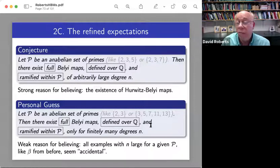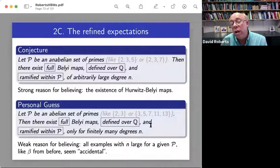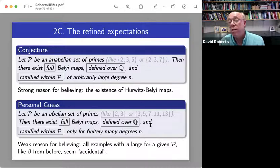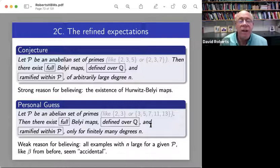So like one weak reason for believing this is the good examples that we do have seem very accidental. So there's a lot of open problems on this slide. You could try to prove the conjecture. You could try to prove the personal guess. You could try to disprove the personal guess.